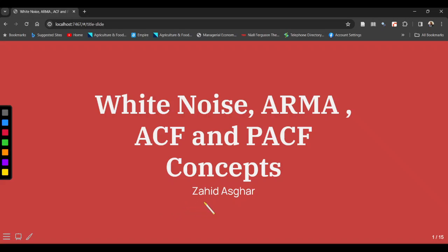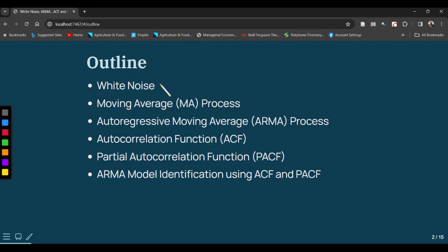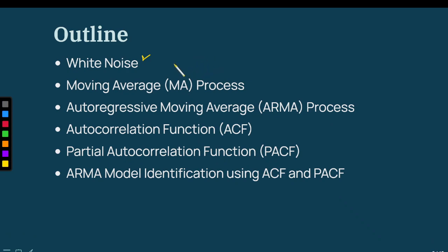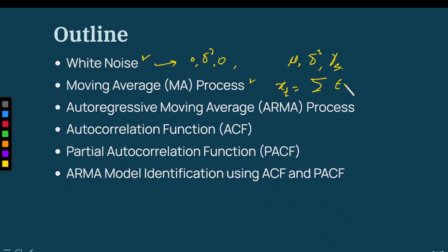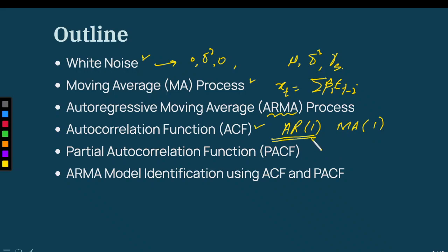In the last video, we discussed white noise process and stationary process. White noise has mean zero, standard deviation sigma squared, variance, and covariance equals zero. Stationary process has constant mean, constant variance, and covariance that is a function of lag but not time. Moving average process is a weighted average of previous epsilon values, and ARMA is a mixture of autoregressive and moving average. ACF was derived for AR1 and MA1 models — for AR1, ACF decays geometrically, and for MA1, ACF becomes zero after the first lag.